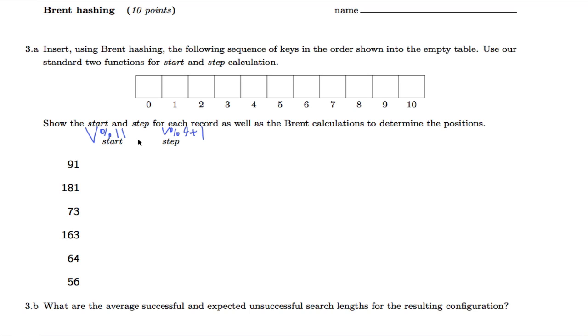We calculate all of those: for 491 it's 3 and 2, for 181 it's 5 and 2, for 73 it's 7 and 2, for 163 it's 9 and 2, for 64 it's again 9 and 2, and for 56 it's 1 and 3.